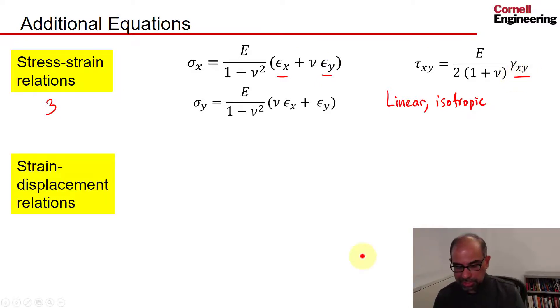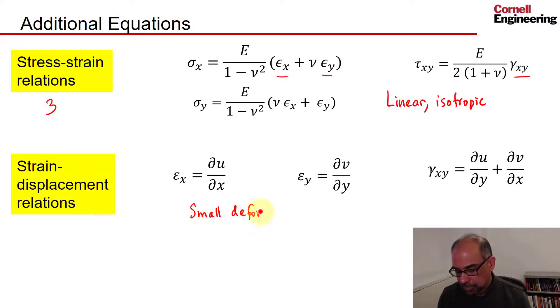So we need additional equations from the strain-displacement relations. That's the strain-displacement relation for the normal strains, and that's for the shear strain. The assumption embedded there is small deformations. So we have added three equations but only two unknowns: the u displacement in the x direction and v displacement in the y direction.